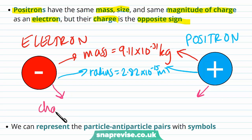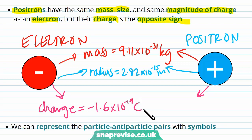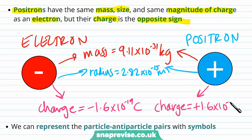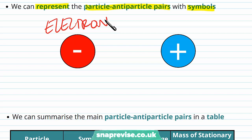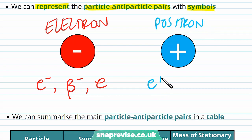An electron has charge equal to −1.6 × 10⁻¹⁹ coulombs, whereas a positron has a charge equal to +1.6 × 10⁻¹⁹ coulombs. The size of the charge is the same — 1.6 × 10⁻¹⁹ — however the sign is different. We can represent the particle-antiparticle pairs with symbols: for our electron we use e⁻, β⁻, and also just e; then for the positron the corresponding symbols are e⁺, β⁺, and ē.